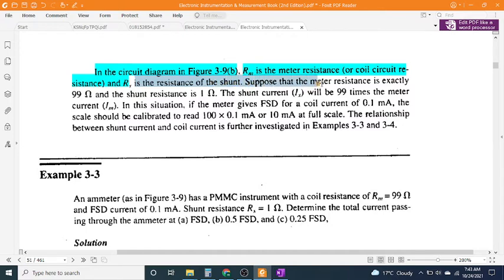Suppose that the meter resistance is exactly 99Ω and the shunt resistance is 1Ω. The shunt current will be 99 times the meter current. In this situation, if the meter gives FSD for a coil current of 0.1 mA, the scale should be calibrated to read 100 × 0.1 mA or 10 mA at full scale.